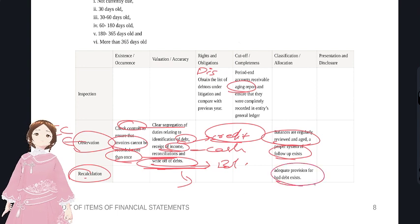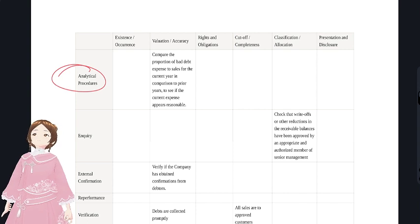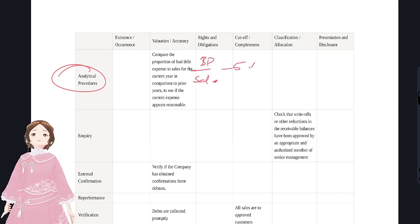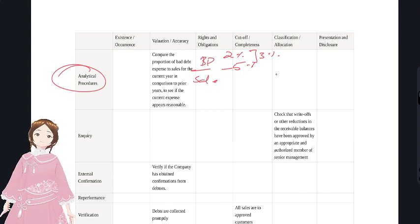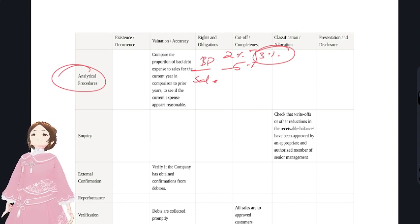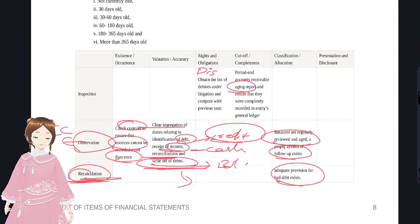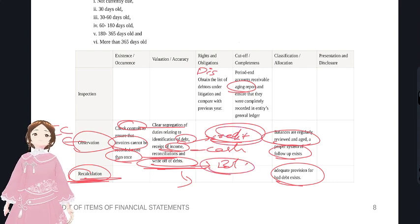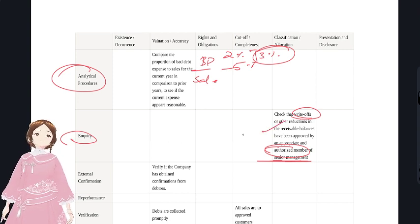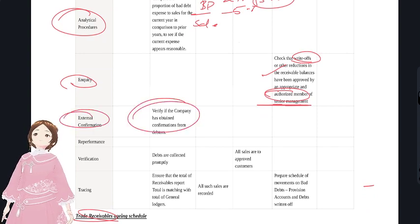For recalculation: recalculate the provision for bad debts - whether adequate provision exists. For analytical procedures: calculate the bad debts-to-sales ratio; if it's 5% this year versus 2% last year, a 3% increase indicates possible fictitious sales and requires investigation for trend analysis. For inquiry: ask whether bad debt write-offs were properly authorized by senior management - the person dealing with credit sales cannot authorize write-offs.